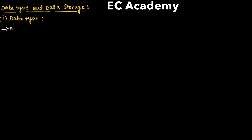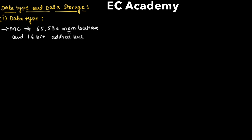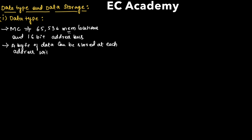If we consider a microcontroller, it consists of 65,536 memory locations and a 16-bit address bus. A byte of data can be stored at each address with this memory space in the microcontroller.